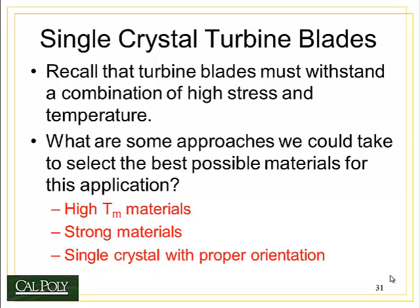First of all, we could pick materials with high melting temperatures. These materials would have very high bond strengths, and that makes it hard for a dislocation to move because you have to break the bonds in order to move the dislocation. Another approach is to choose stronger materials, which is similar to the first approach, but also involves materials that have less ability for dislocations to move.